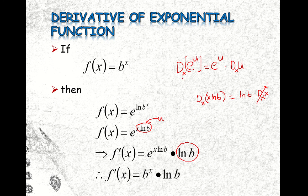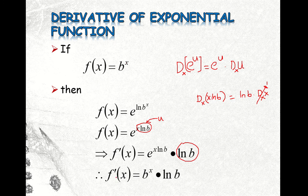The derivative of e to the u with respect to x is equal to e to the u times the derivative of u with respect to x. Our u here is x ln b, and since ln b is a constant, the derivative of u is ln b. Therefore, if f of x equals b to the power x, then f prime of x equals b to the x times ln b.